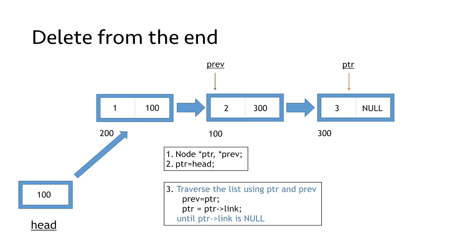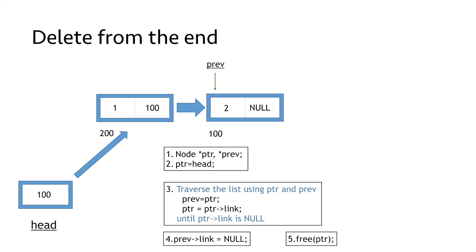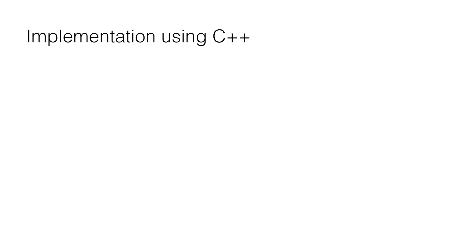Using the priv pointer we make the link part of the second last node as null. In the final step we delete the last node by freeing the memory allocated to the node pointed by ptr. Thus we have successfully deleted the last node in our linked list.